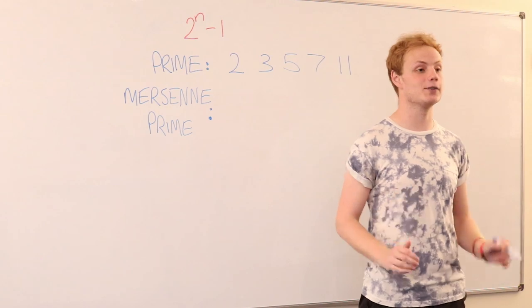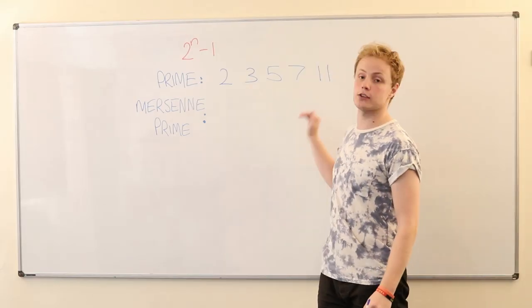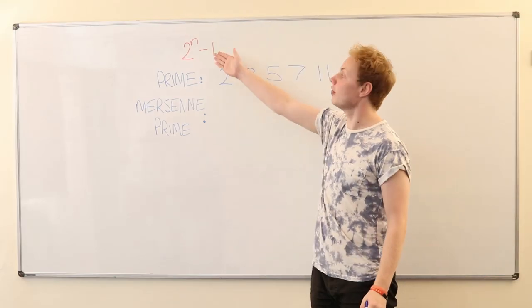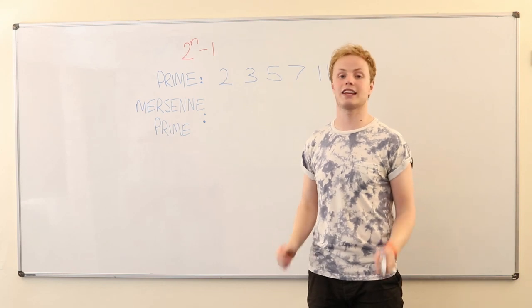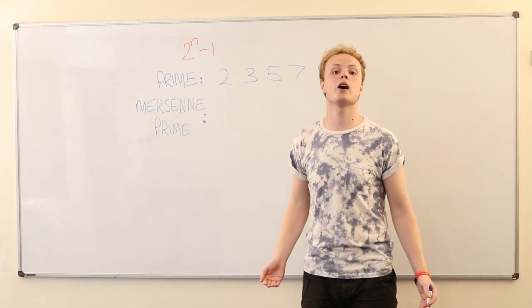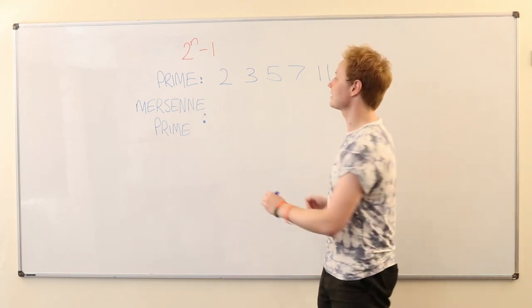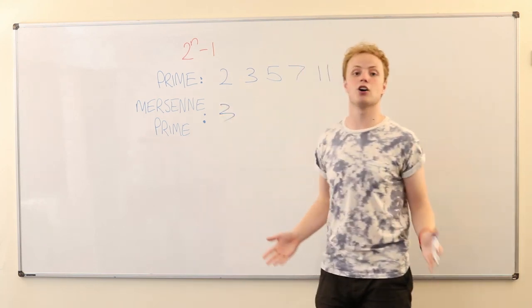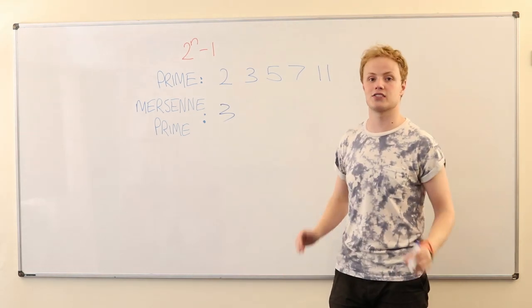To get a better idea of what these Mersenne primes look like, let's take a look at the first few examples. So for each of our first few primes, we're going to work out this formula and see what that gives us. So we've got our first prime is two, 2 to the power of 2 minus 1, 2 squared minus 1, that's 4 minus 1, which is 3. And three is a prime number. So there we have it, our first Mersenne prime.